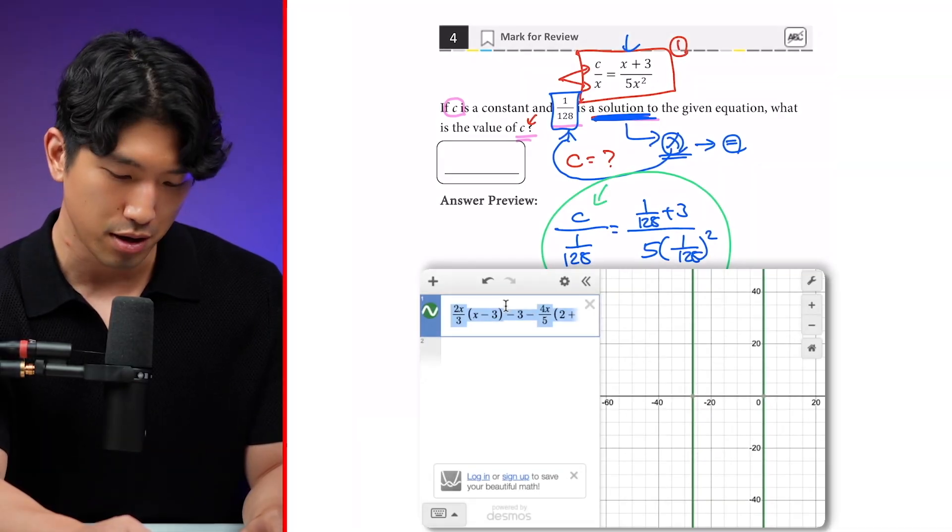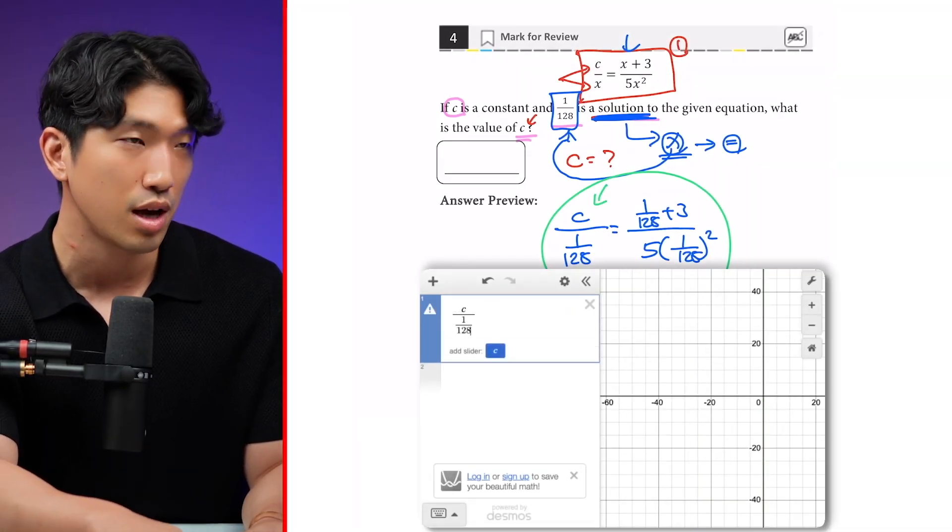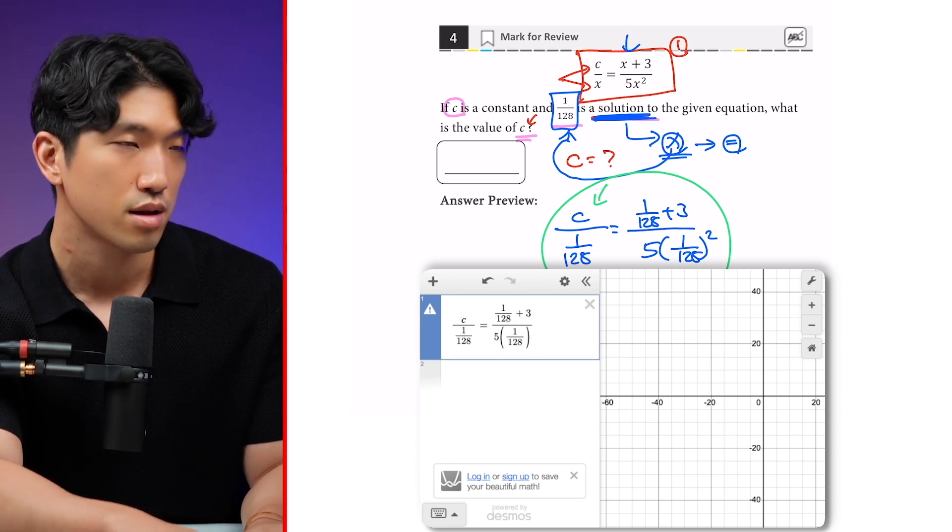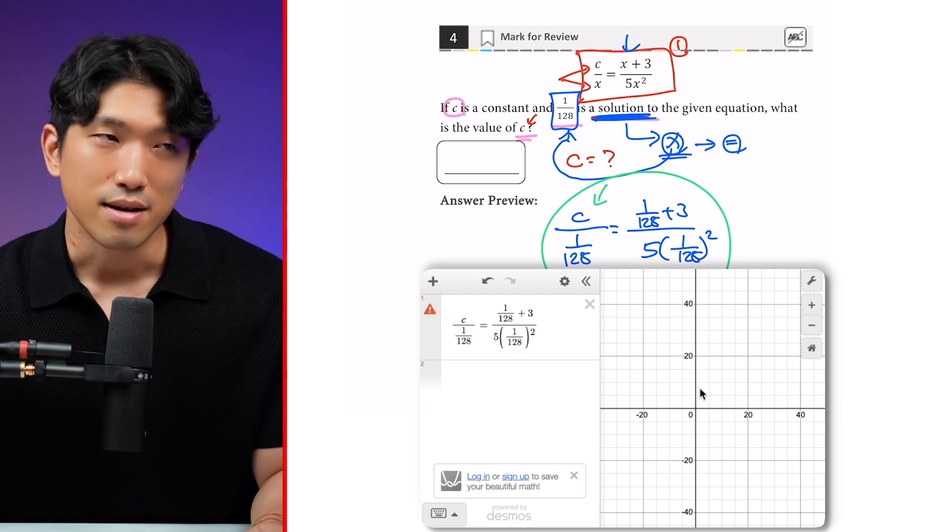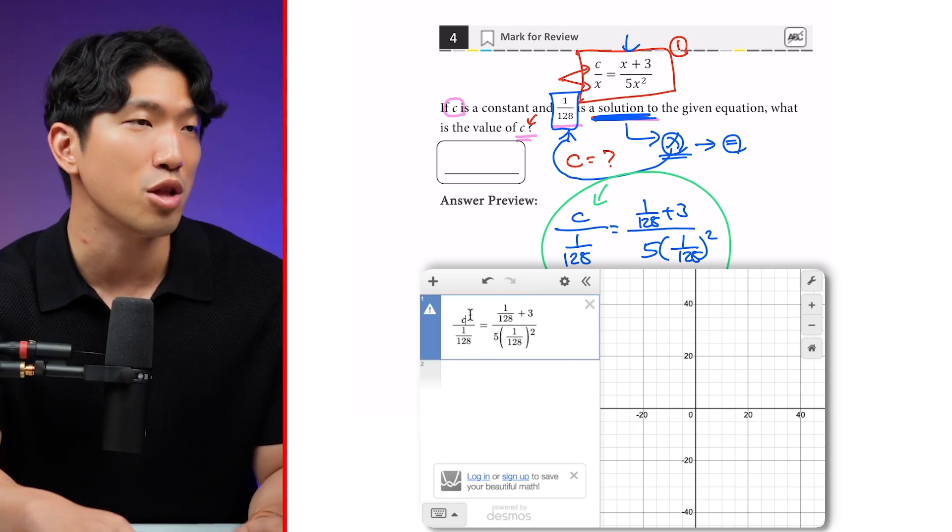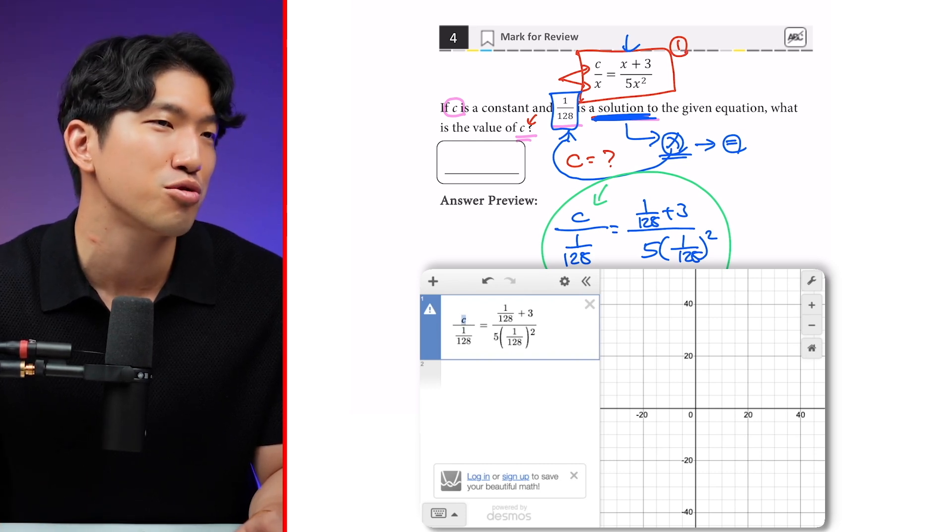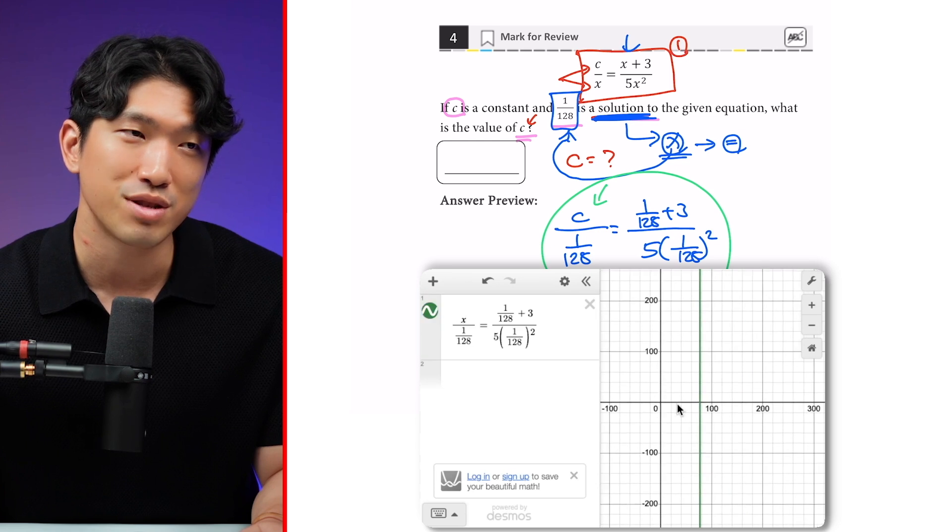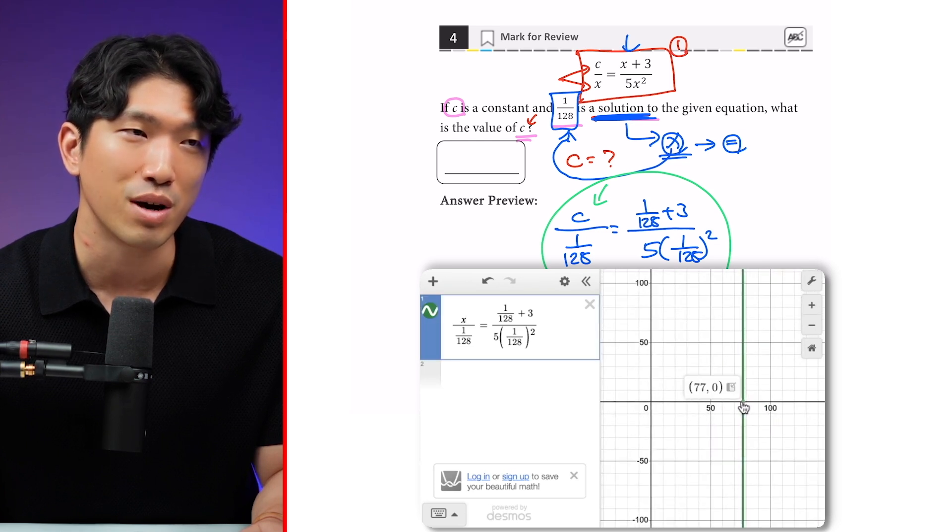So if we pop it in, we're going to get c/(1/128) equals the rest. And what do we see? We see nothing. And why is that? And that's because Desmos only understands x or y and no other letters. So let's change it to x. And what do we see? We see nothing. But if you zoom out, we see that our x needs to be 77.7.